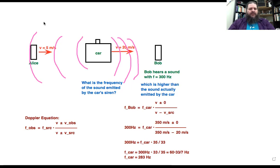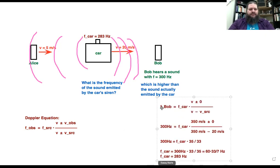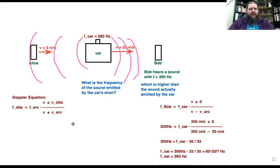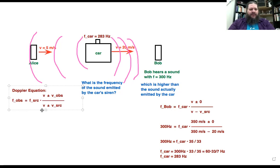Now that we know the frequency the car is producing — 283 hertz — we can also figure out what frequency Alice perceives. Alice is going to hear a different frequency because first of all, the car is moving away from her, and also she is in motion as well. So let's figure out what frequency Alice hears.